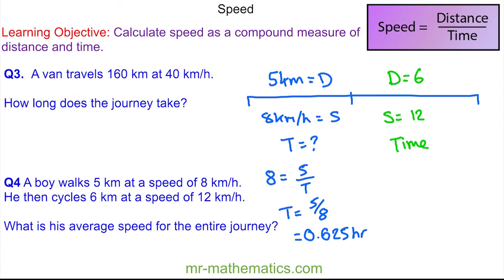For the second part of our journey, the speed of 12 is equal to the distance which is 6 divided by the time. So the time here will be 6 divided by 12, which is 0.5. We'll add these two times together, so the time in total is 1.125 of an hour.